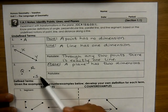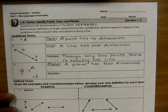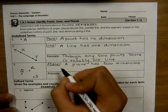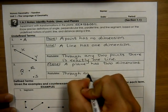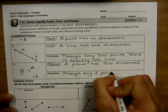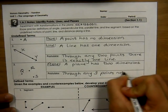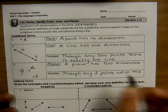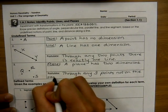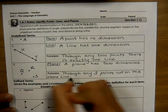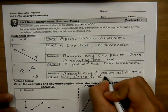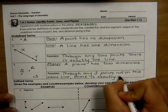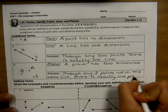two dimensions, but no height, so not three-dimensional. A postulate here is that through any three points not on the same line, there is exactly one plane.